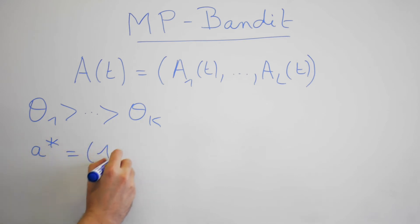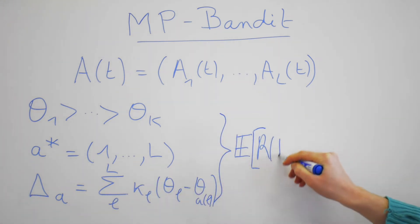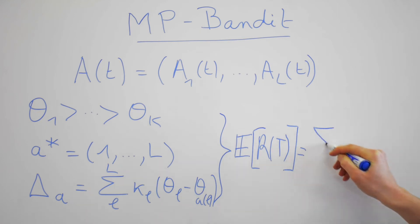If we assume theta's are ordered, the optimal action A star corresponds to showing the best ad in first position, the second best in second position, and so on. Denoting delta the instance regret when selecting an action compared to the optimal one, we can write the expected regret by summing over all the different actions leading to a familiar formula in bandit literature.